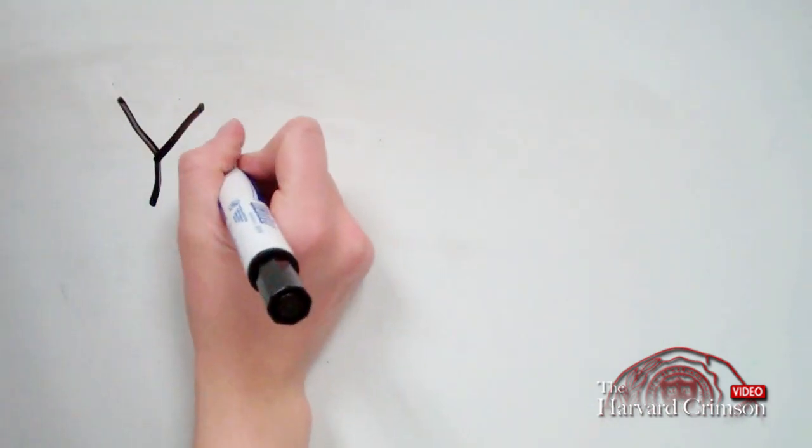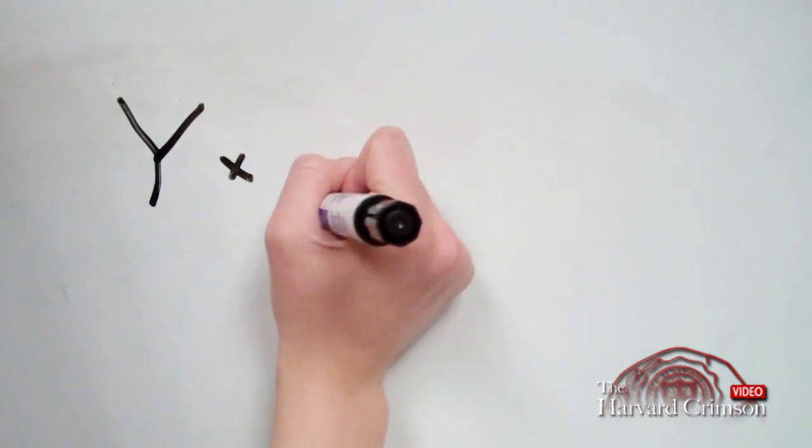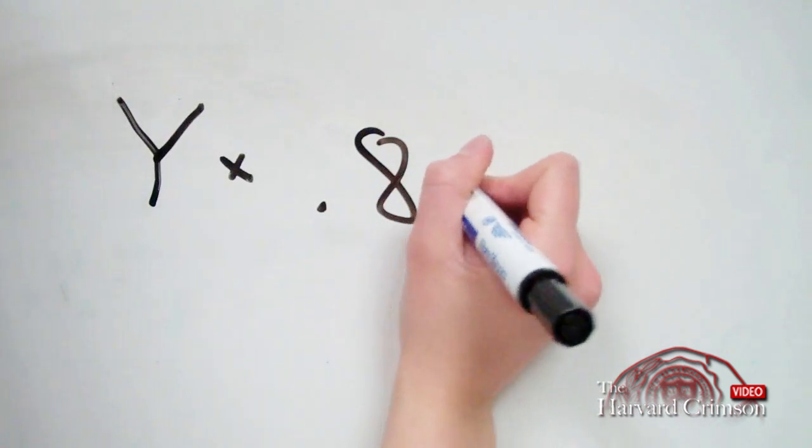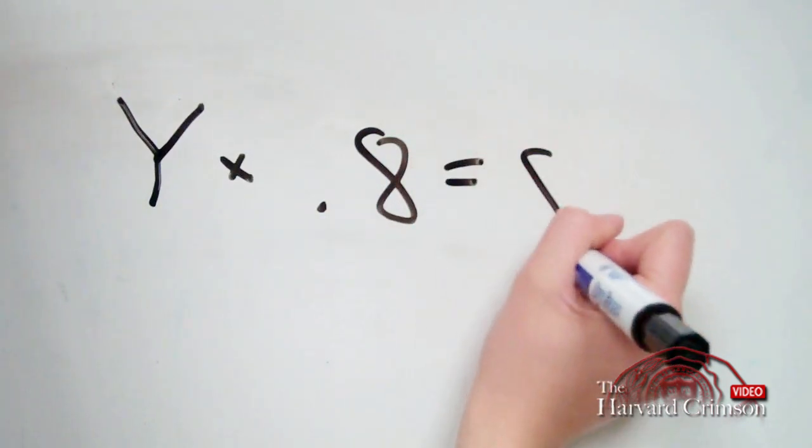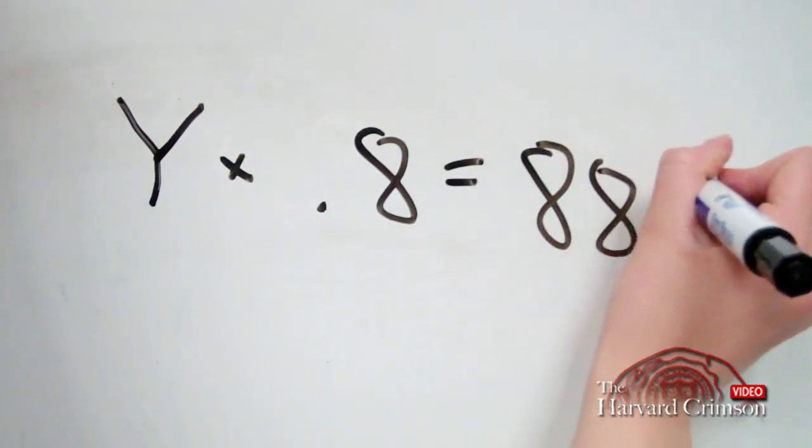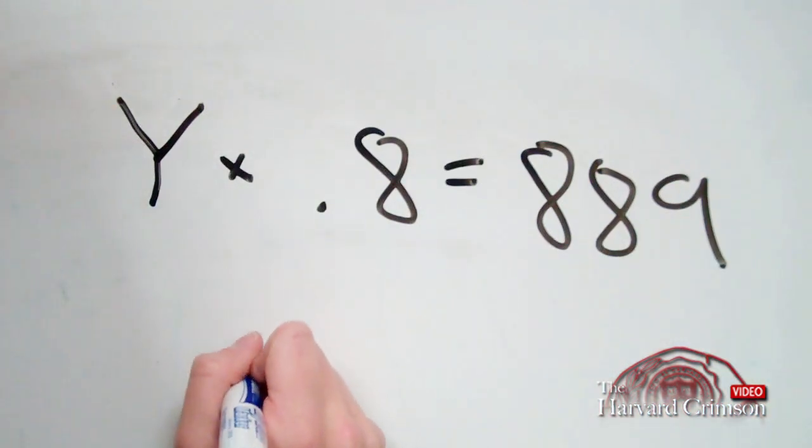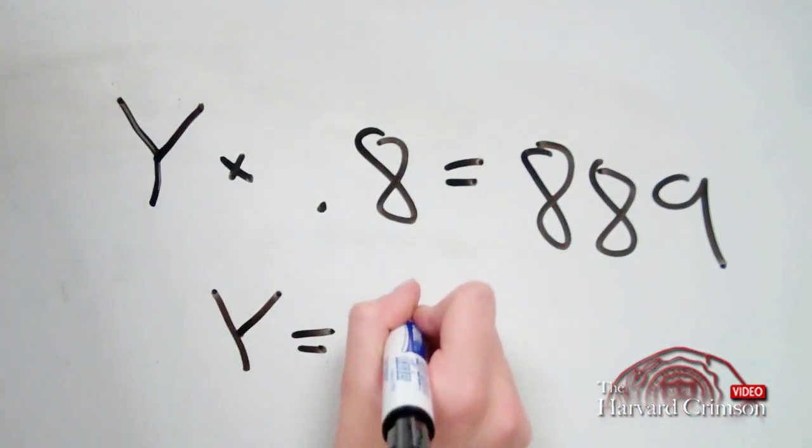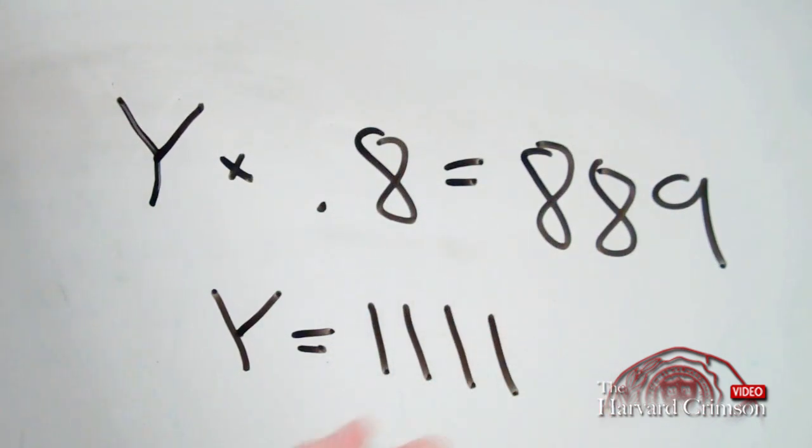Let's say the rate of regular decision admits that matriculate to Harvard is high, say about 80%. If Y represents the number of acceptance letters the admissions office can send out on Thursday, then about 1,100 students will be accepted in addition to the Early Action admits.